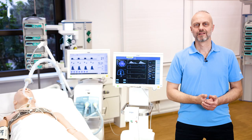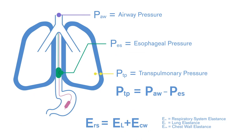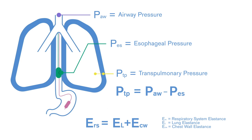The monitoring of esophageal and transpulmonary pressures is increasingly gaining interest amongst intensivists. The major motivation for using this information is that knowing the esophageal pressure allows discriminating between the lung and chest wall elastance and calculating the transpulmonary pressure, because this is the pressure which actually distends the lung and thus needs to be limited.